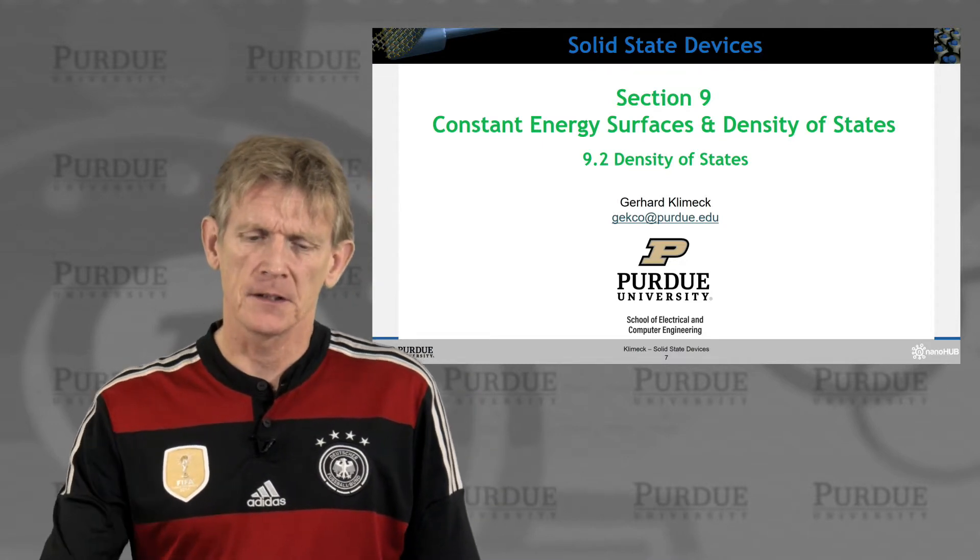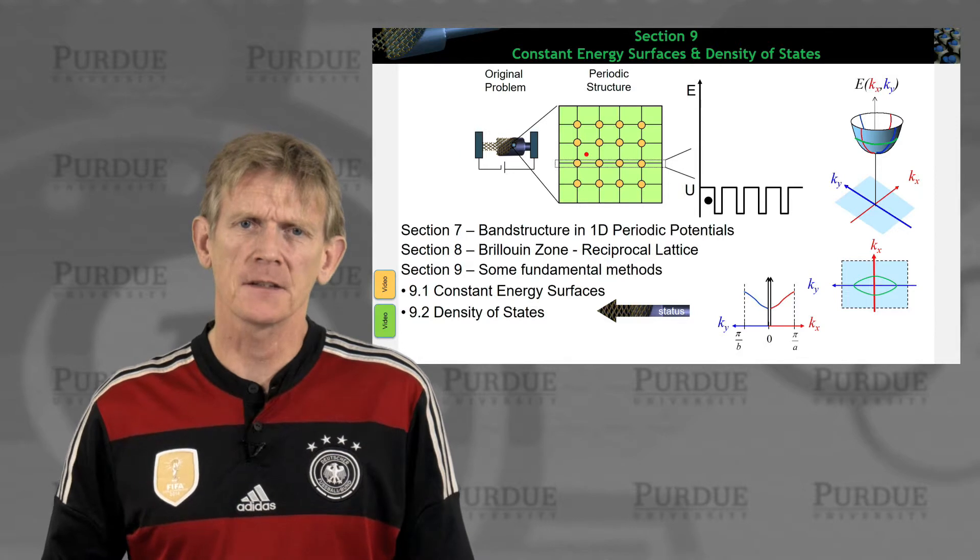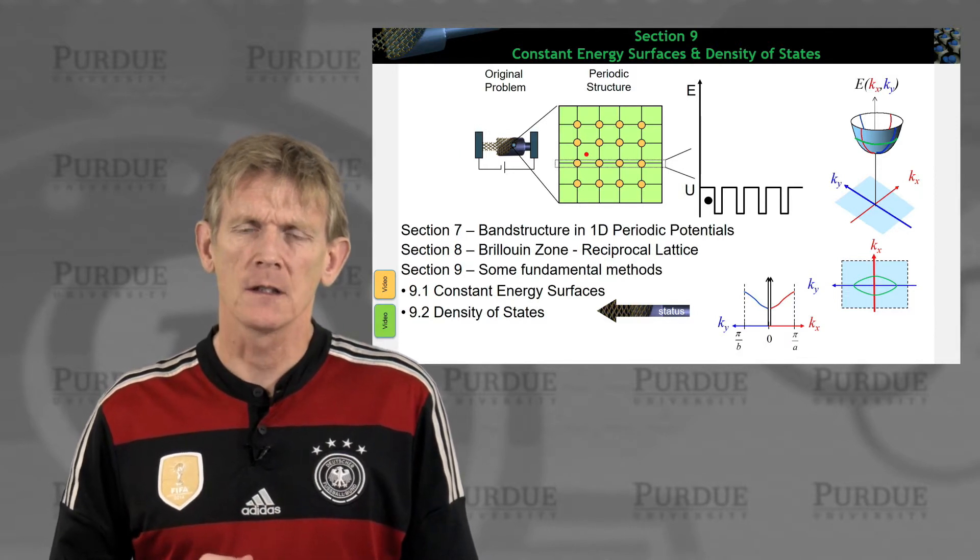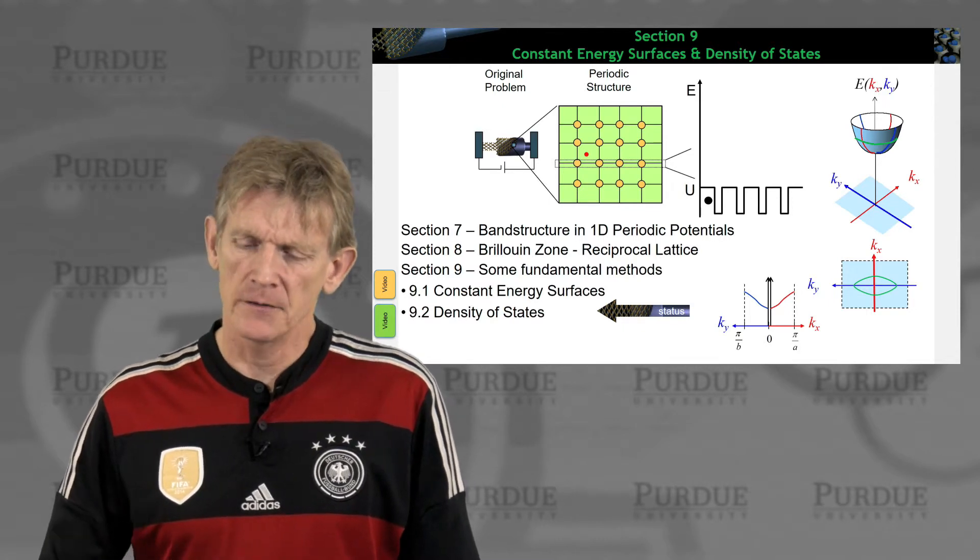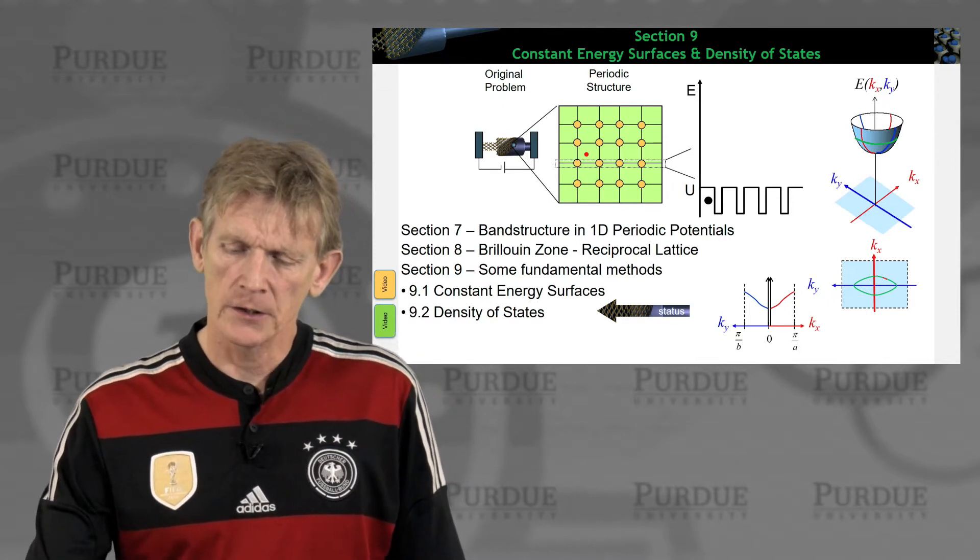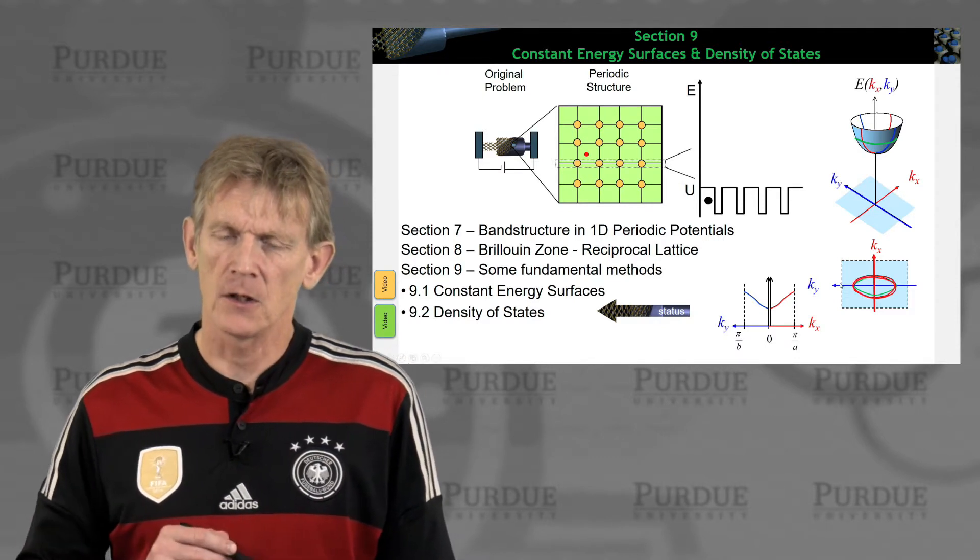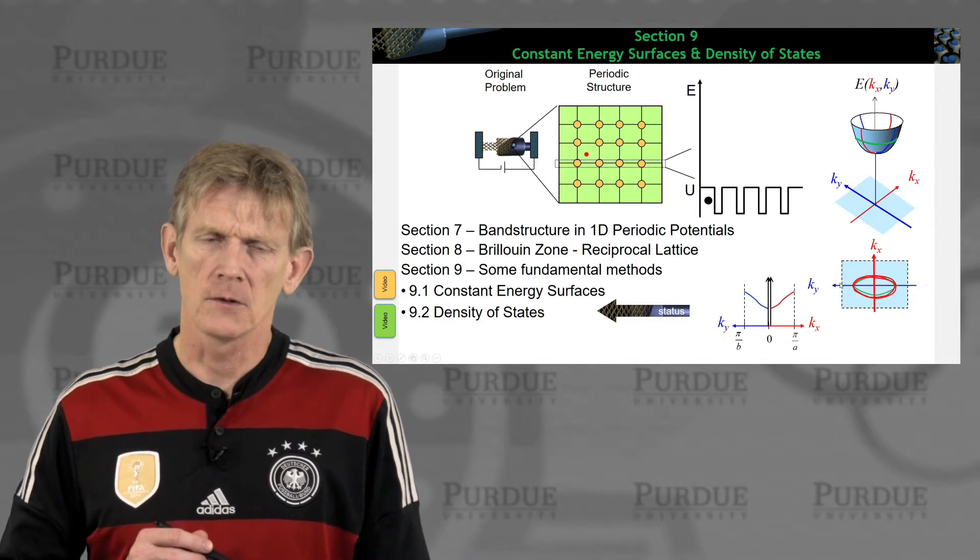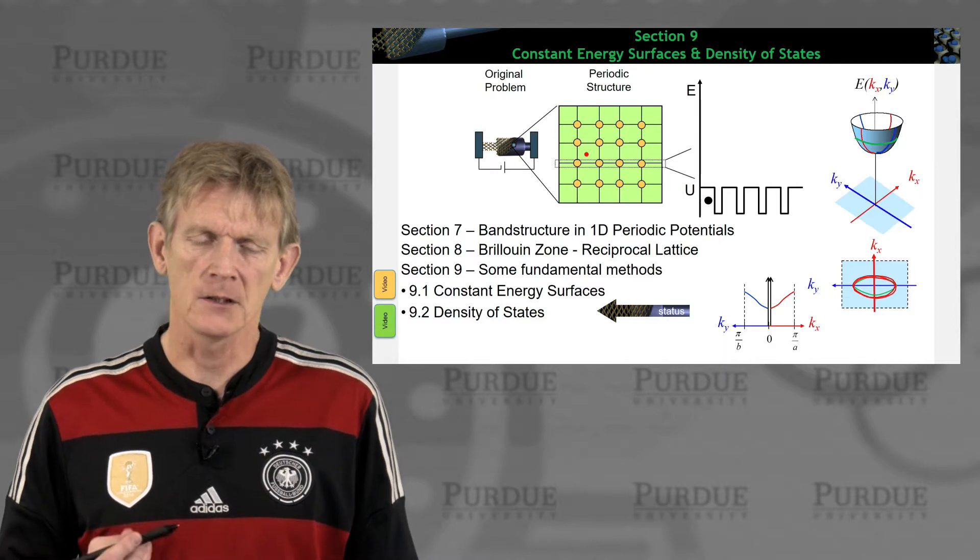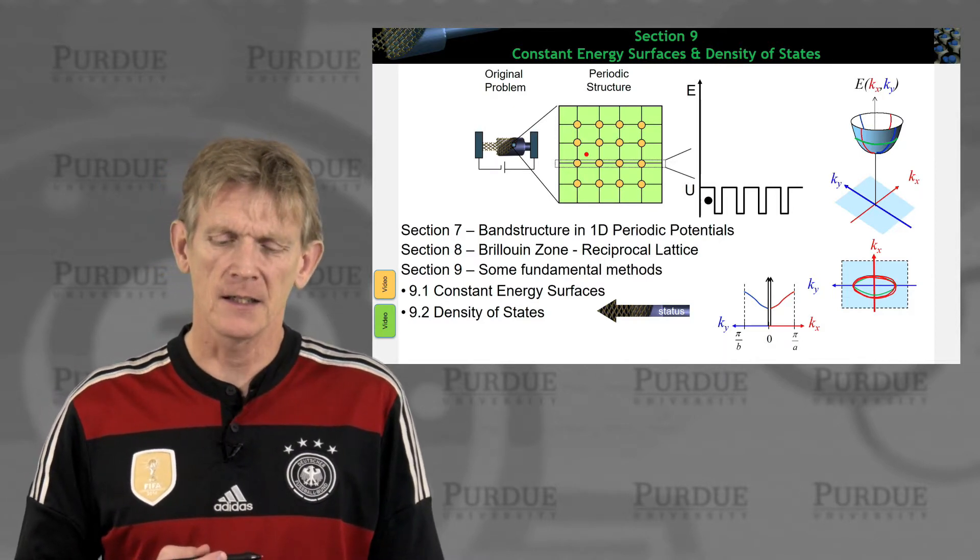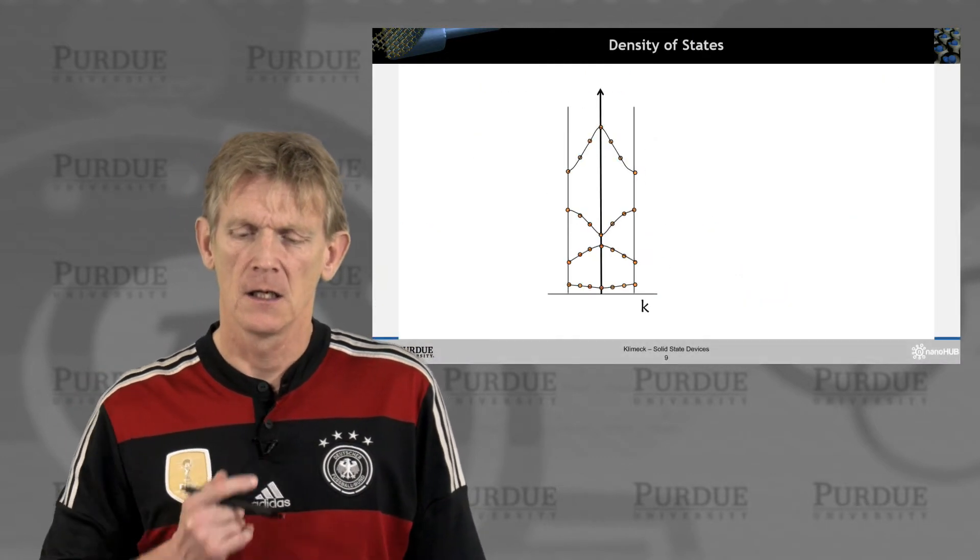All right, so let's talk about density of states. That's in the context of band structure, where we have learned about constant energy surfaces. What we're going to study is how many states live on a sliver of constant energy. We're going up and down in energy slightly in an infinitesimal size, and we want to measure how many k states are in that little sliver.